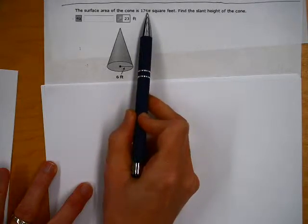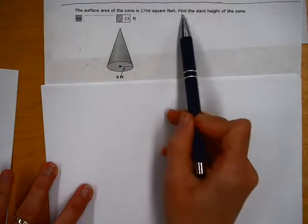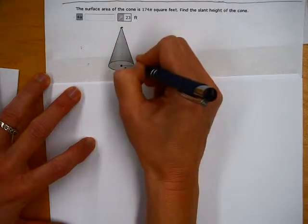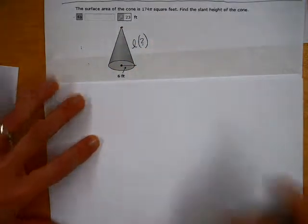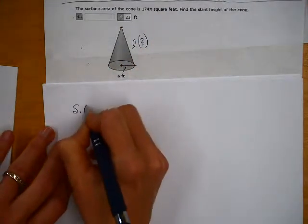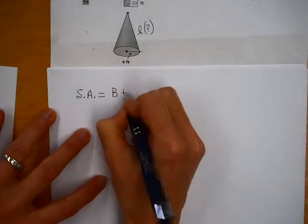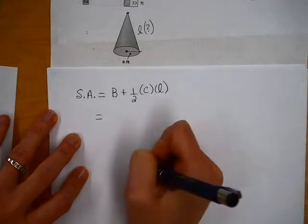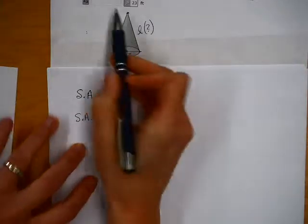It says the surface area of the cone is 174 pi square feet. Notice that they didn't use 3.1416, they just left it in terms of pi is what we call that. And it says find the slant height of the cone, so we're asked to find from here down to here the slant height. That's what we're finding here. So, again, I'm going to go to that formula sheet.